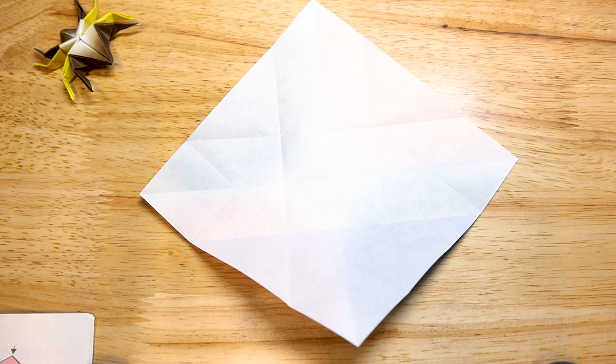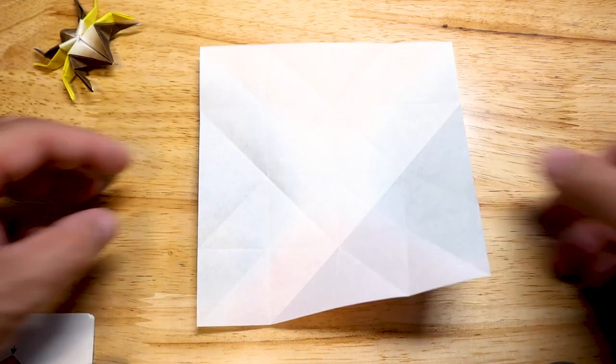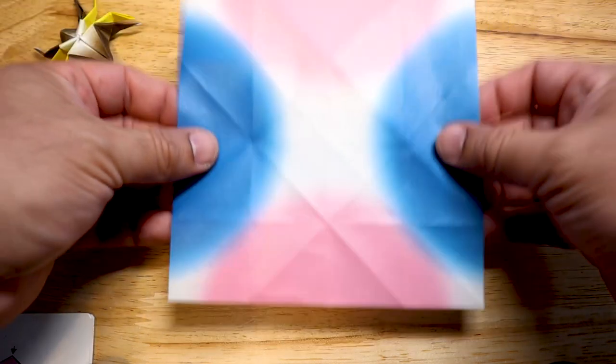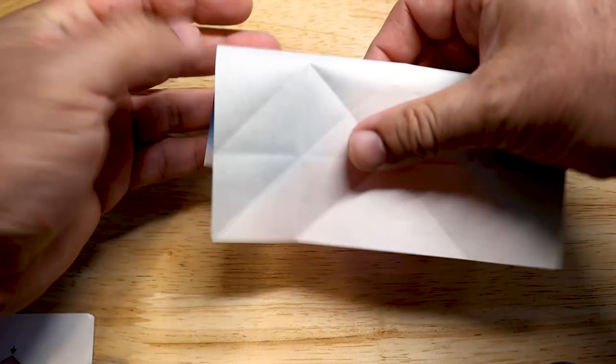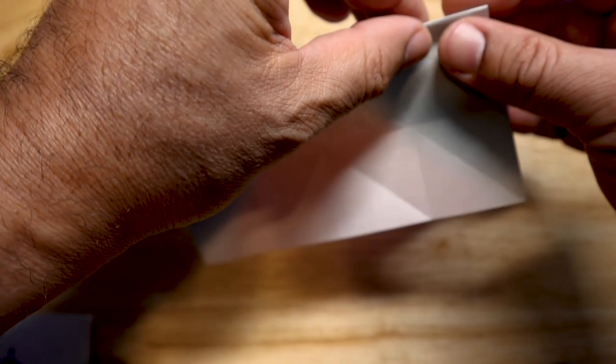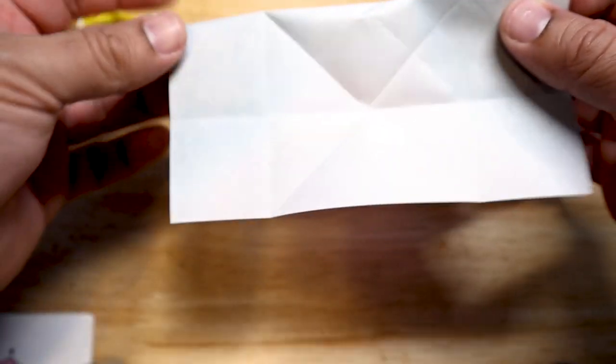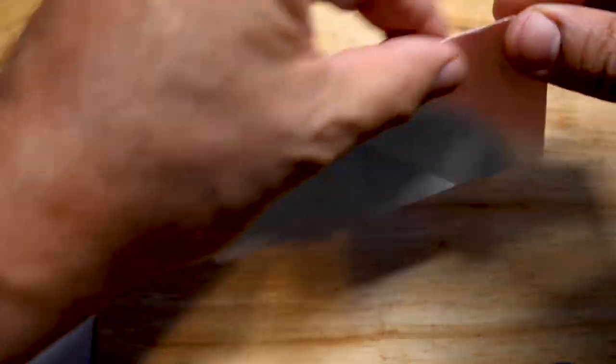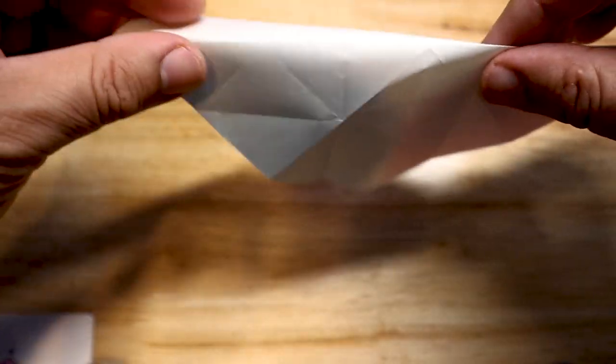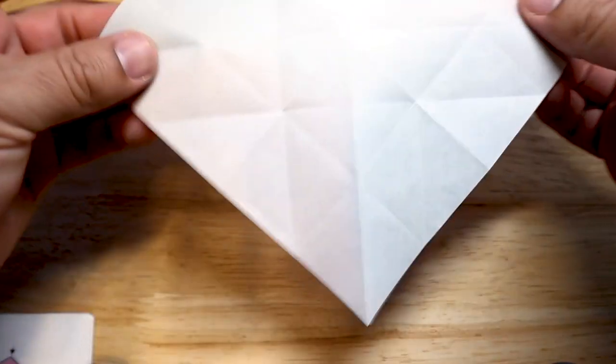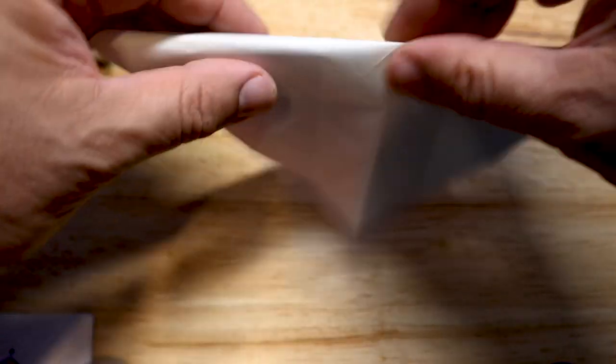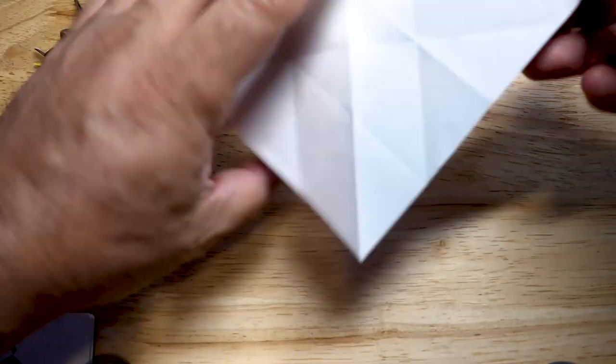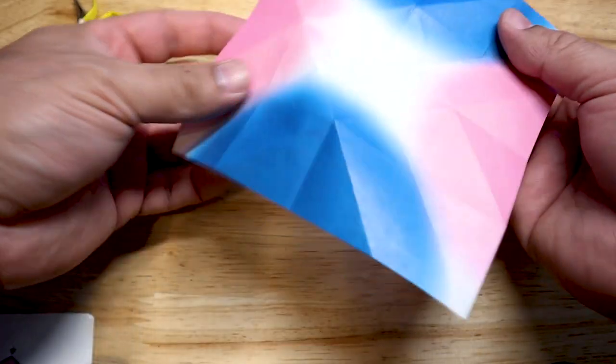Once we have our paper folded as such, now we're going to reverse the folds on the halfway marks, both on the horizontal and on the diagonals. Be very careful to follow the already folded lines so that you don't lose your edges. This step is important because it's going to make it easier for you to do the mountain fold that follows these steps.